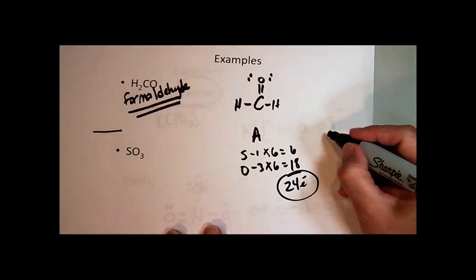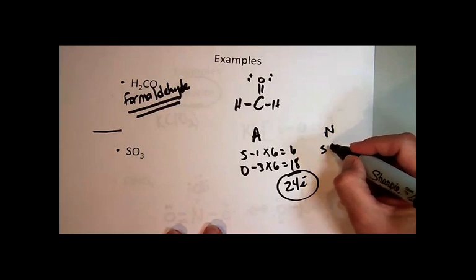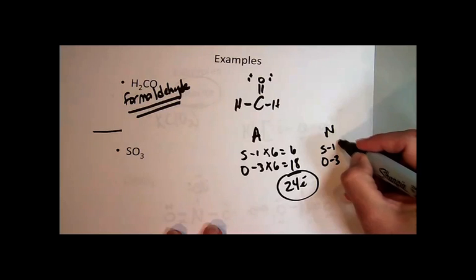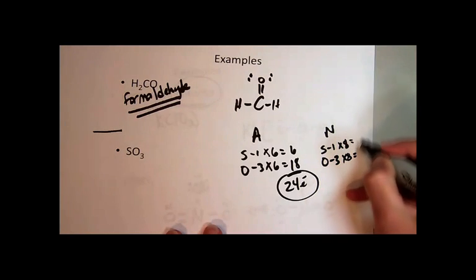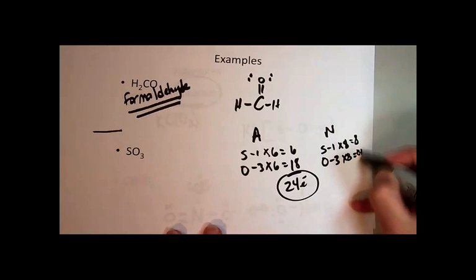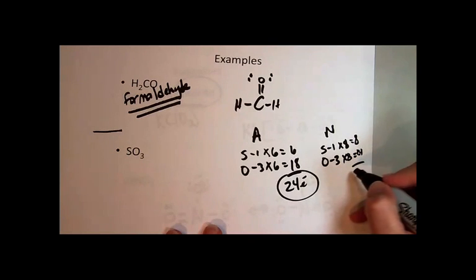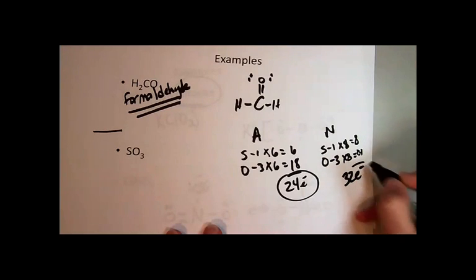And then the needed, of course, we have sulfur, one sulfur, three oxygen. They're normal. They both need eight. And so that's eight plus twenty-four equals thirty-two electrons needed.